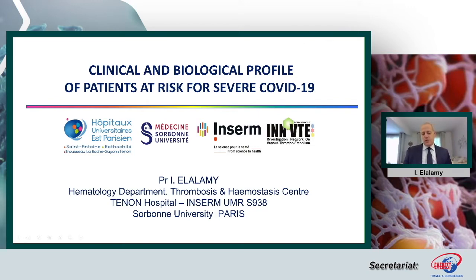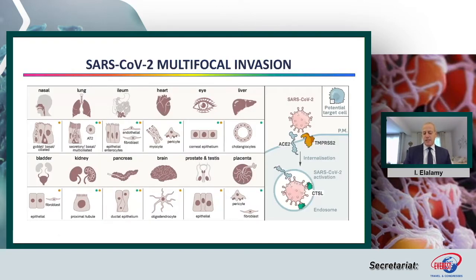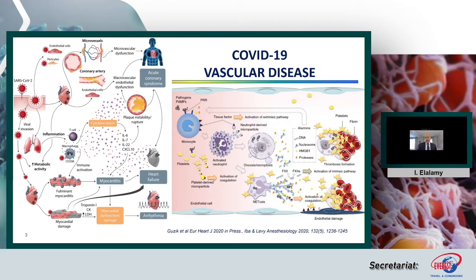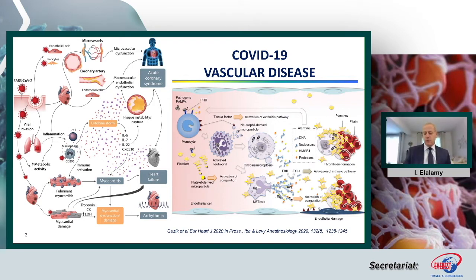As you know, SARS-CoV-2 infection is leading to a multifocal invasion regarding numerous cell tropism. So it's a massive, major inflammation with an important cytokine release, with serious cardiovascular consequences, as you heard yesterday. We know that COVID-19 is not only pneumonia, but also a vascular disease with an intravascular storm involving numerous cells in the vascular compartment and numerous plasma proteins, leading to a very important hypercoagulable state.